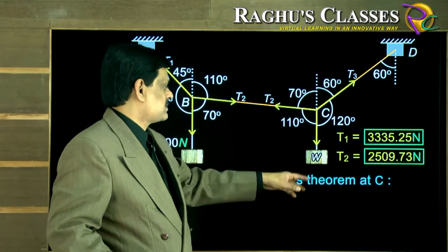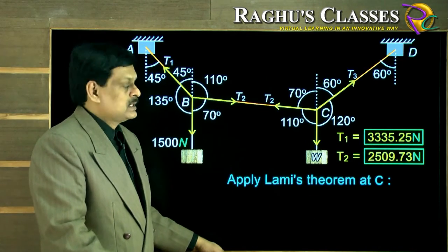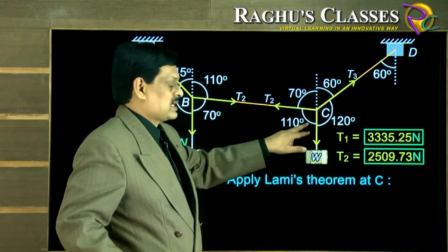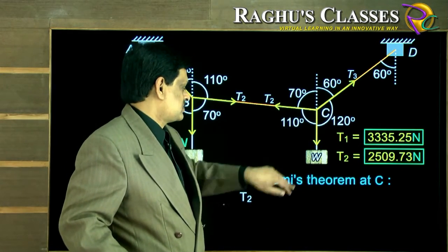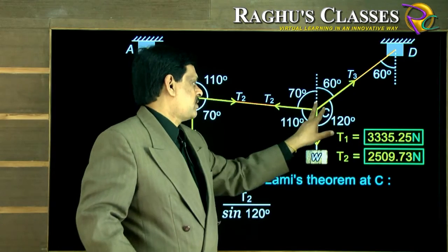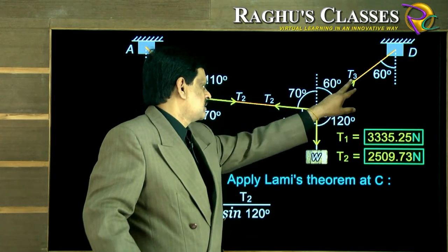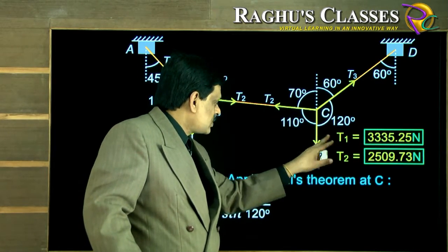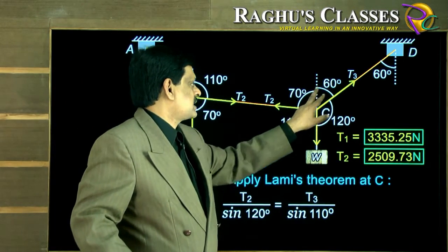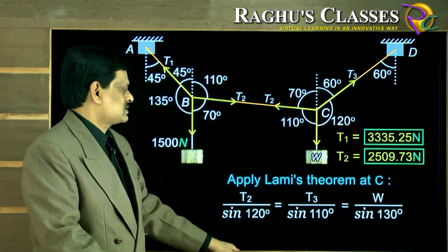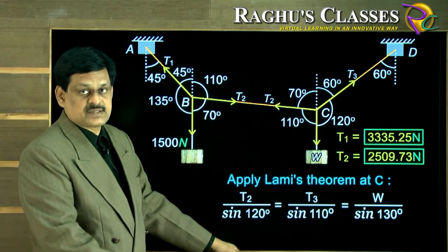Now we apply the same Lami's theorem to the point C. Once again, each force by the sine of the opposite angle. If you take the first force as T2, T2 upon sine 120 is equal to T3 upon sine of this angle, which is 110, is equal to W upon sine 130, because it is 60 plus 70 is 130.